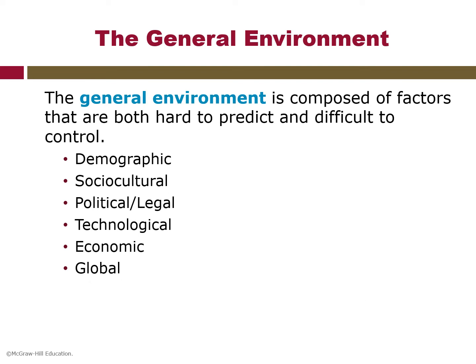Now let us look at the general environment. The general environment is composed of factors that are both hard to predict and difficult to control. It consists of external factors to an industry, usually beyond a firm's control, that will affect a firm's strategy. Although the effect of these factors can vary across industries, every industry has to anticipate the effect of each factor on its long-term strategies. You can refer to Exhibit 2.3 for the impact of various trends on certain industries.